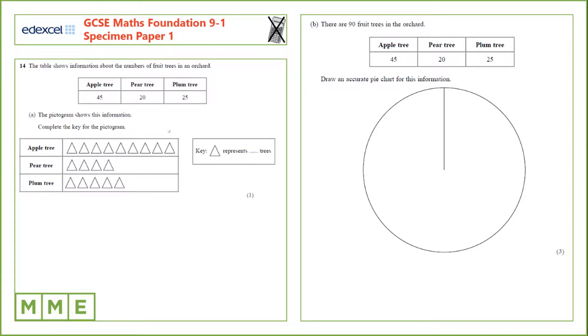These five triangles represent 25 trees. So each triangle should represent 25 divided by the number of triangles, which is 5. We can check this with the pear row here. Four triangles represent 20 trees, so if each triangle represents five trees, that's correct. Therefore, one triangle represents five trees.